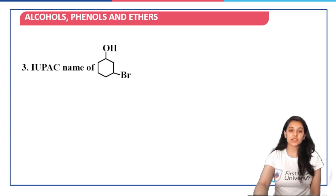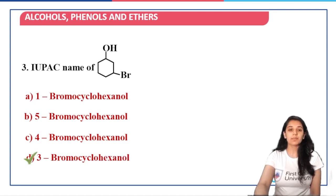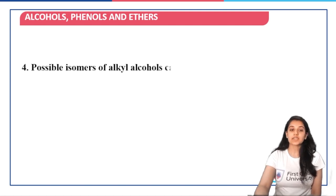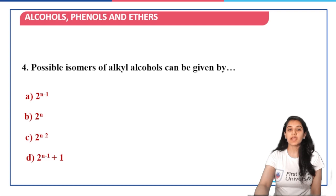Next question: the IUPAC name of the cyclohexane structure — we already dealt with this in the practice session. The answer is 3-bromocyclohexanol. Next question: what are the possible isomers of alkyl alcohols? We have seen it is 2 raised to power (n-2); option C is the right answer.